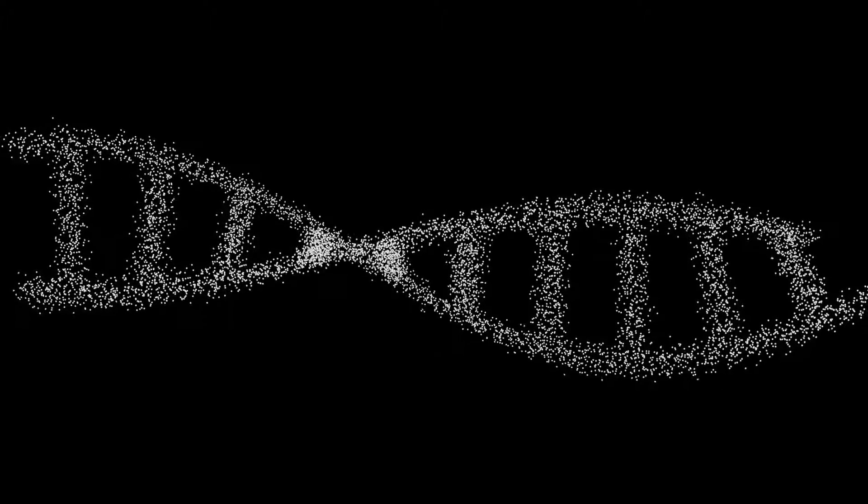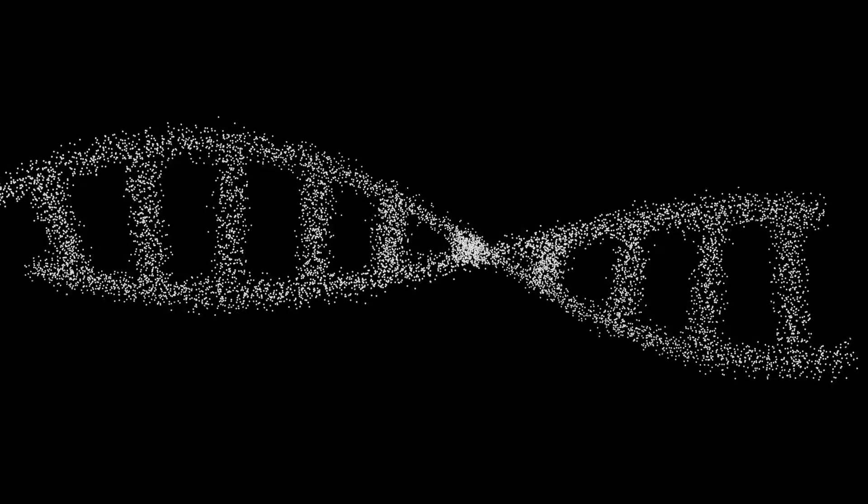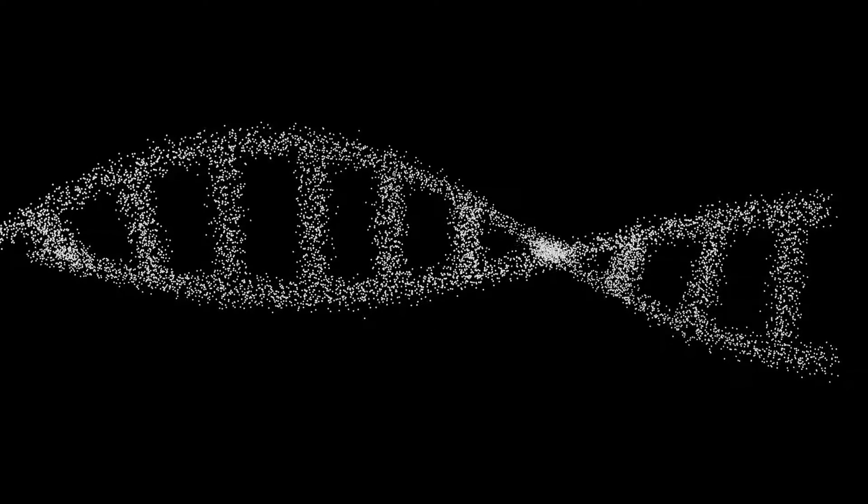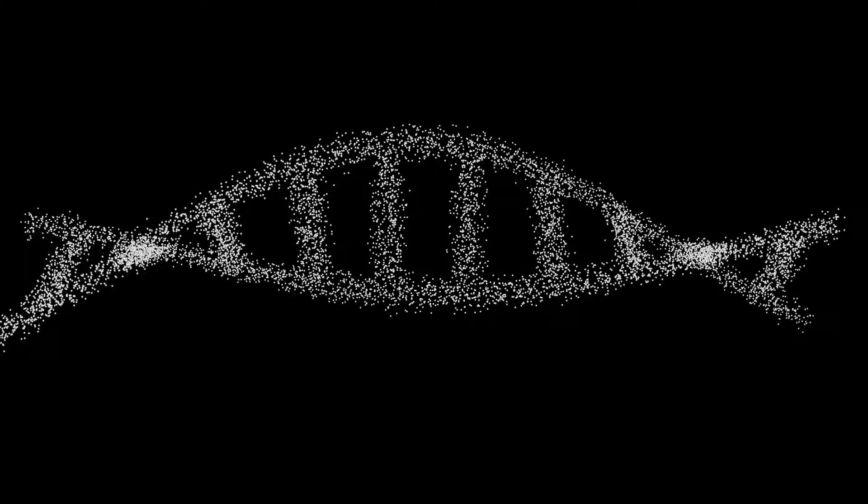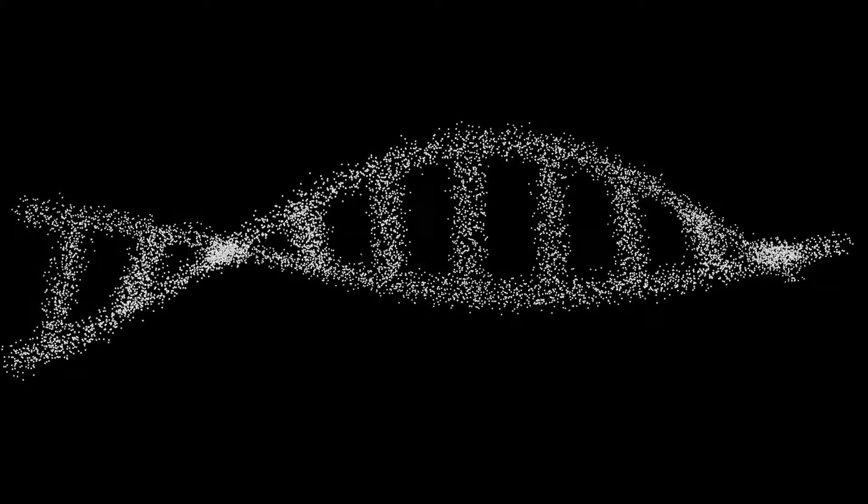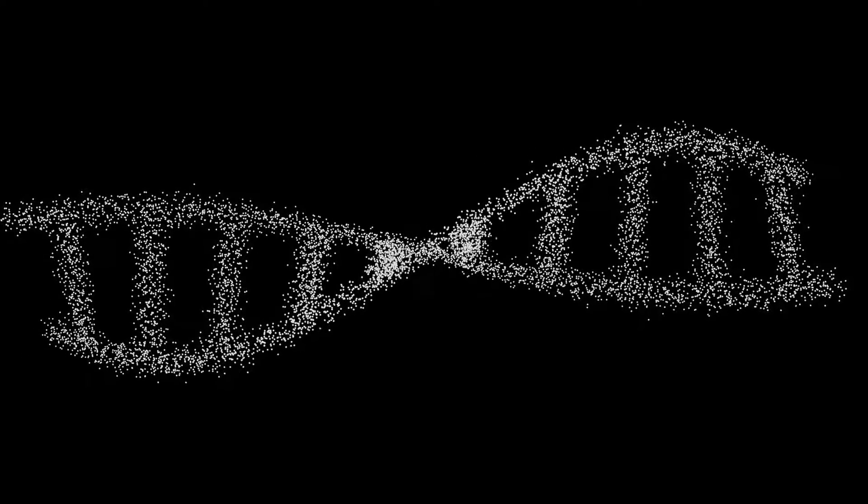A Russian biophysicist named Pyotr Garjajev altered a frog embryo's DNA and turned it into a salamander embryo, using sound to alter the DNA and give it the information needed to become a salamander embryo instead.